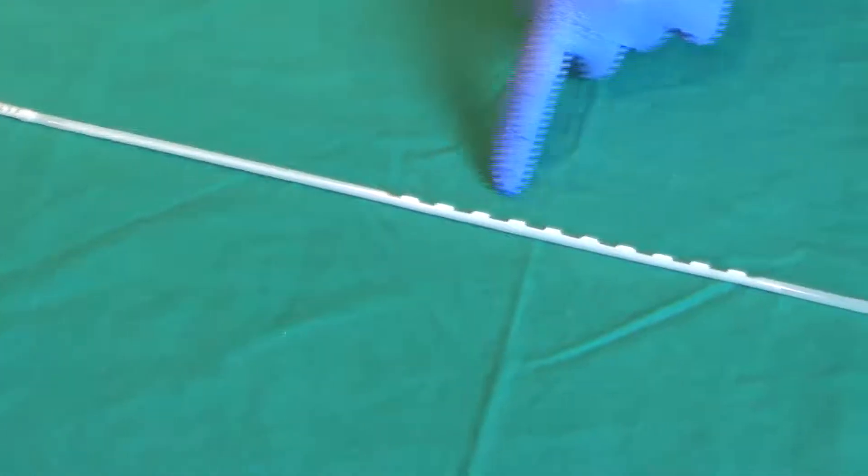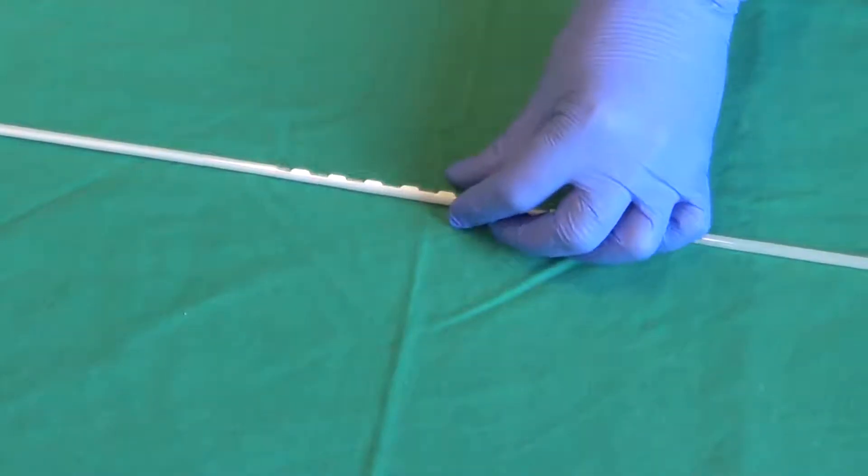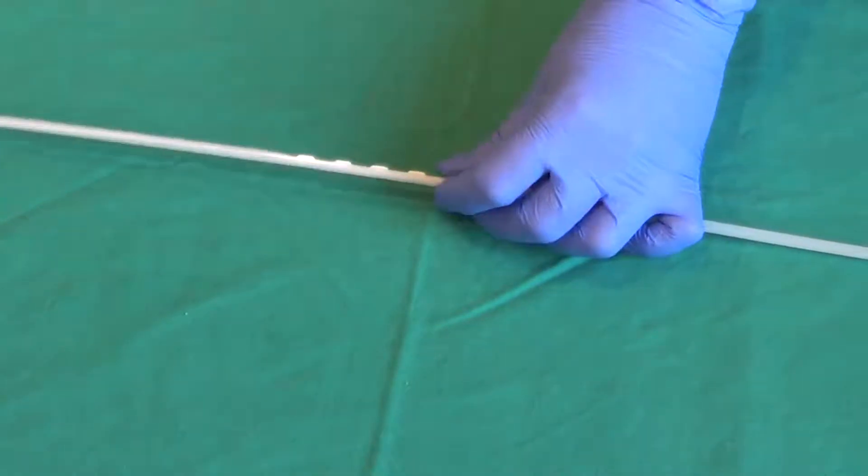A slider is used between the thumb and forefinger to move the tip anteriorly and posteriorly. The slider has blunt teeth to allow grip with disposable gloves.